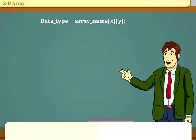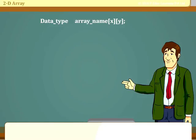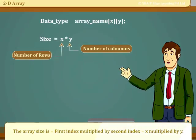Data type array, where x and y are positive integers and x represent rows and y represent columns. The array size is equal to first index multiplied by second index, equal to x multiplied by y.